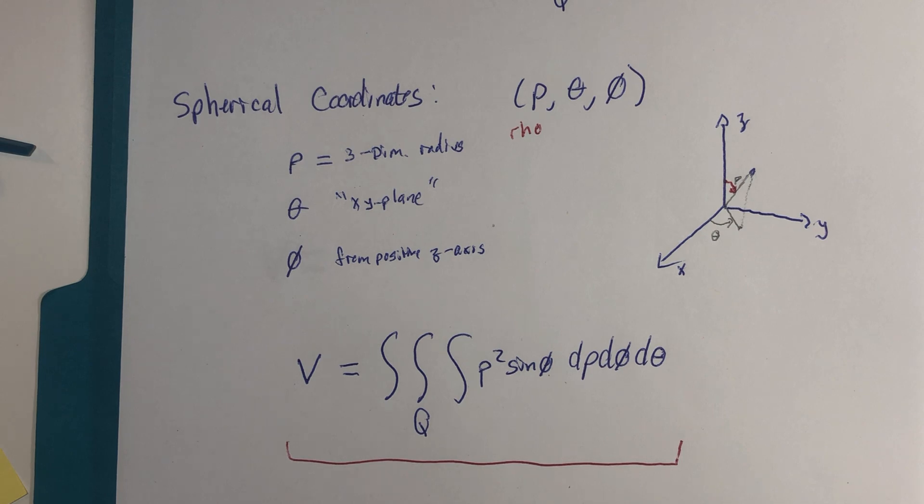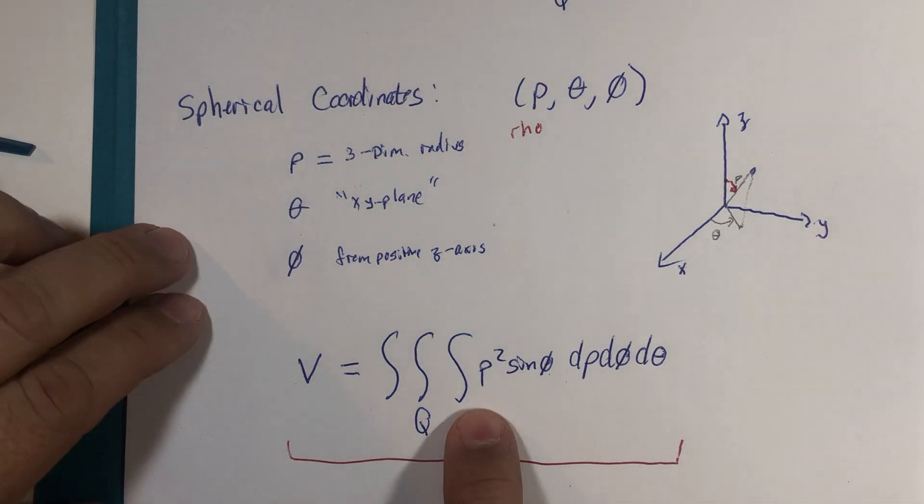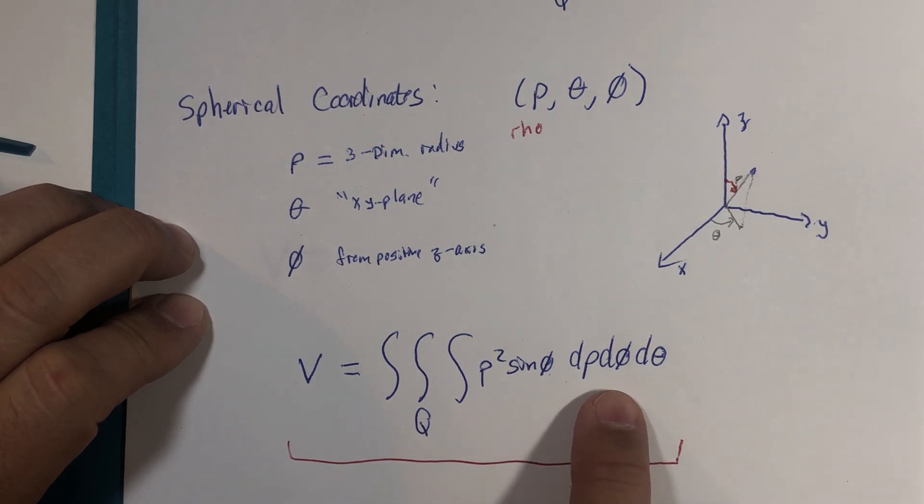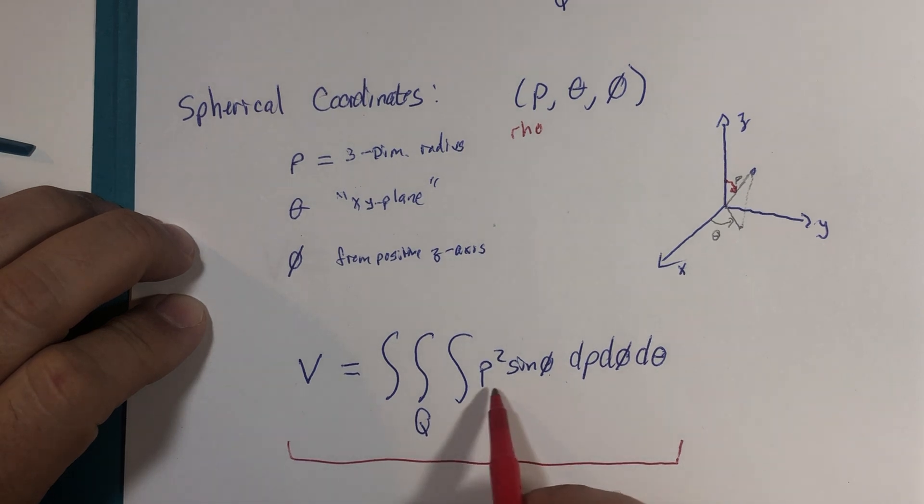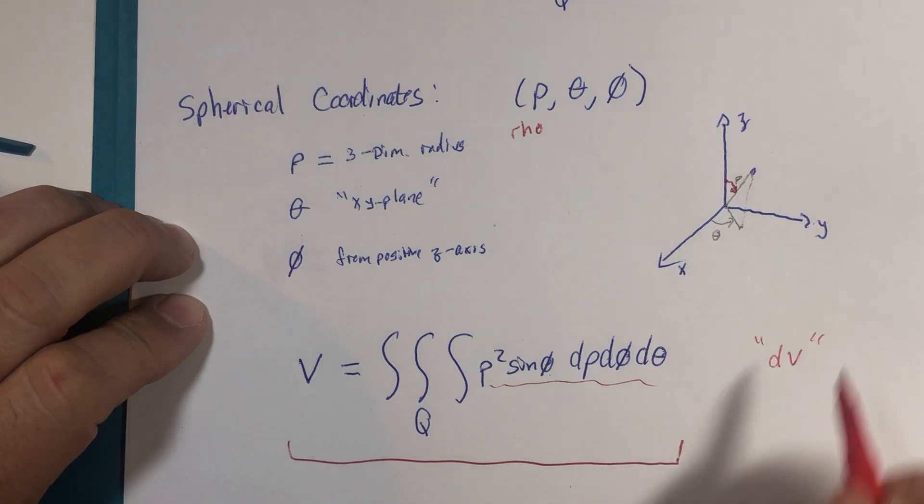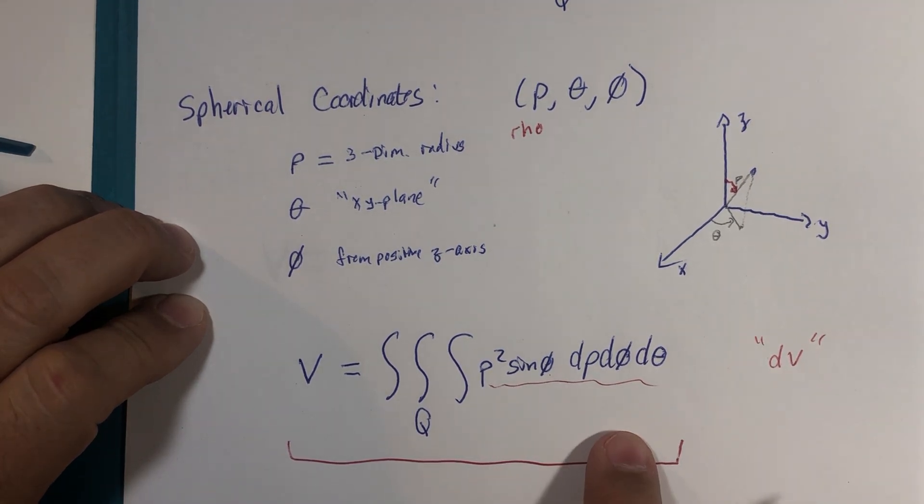And you see that there's two extra factors here, three extra factors if you count this twice: rho squared sine of phi d rho d phi d theta. This entire expression here, that is our dv, that is our volume component.